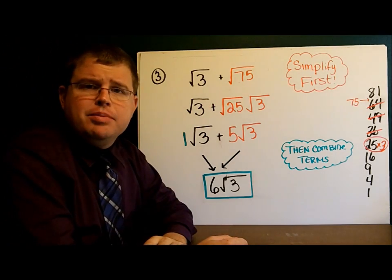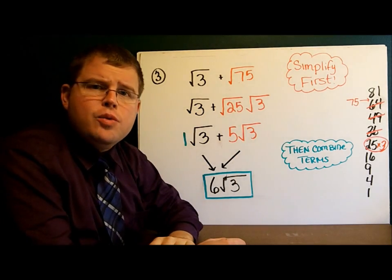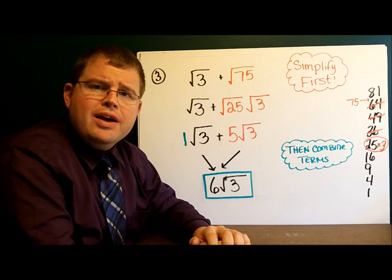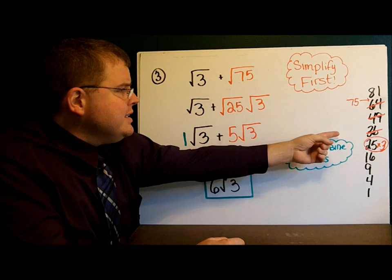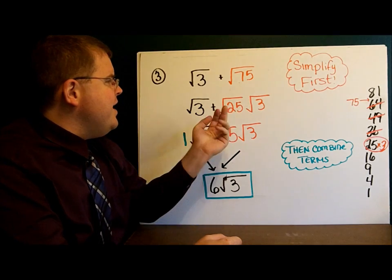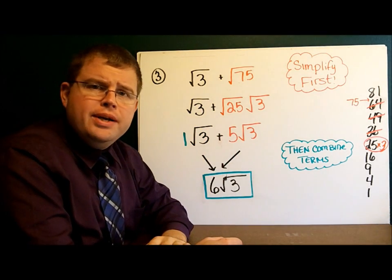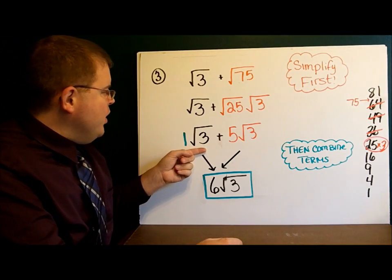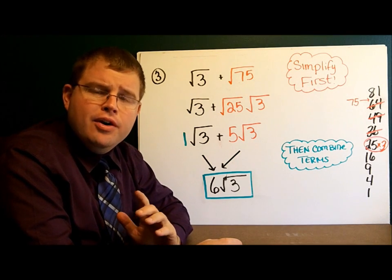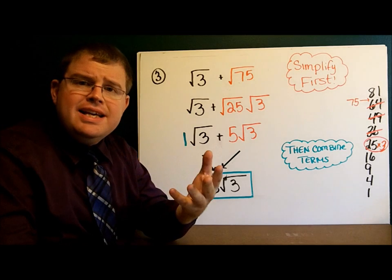The square root of 3 is already in simplest form. The square root of 75, however, is not. I'll go down the list of perfect squares from biggest to smallest to find the largest one that goes into 75. 64 does not, 49 does not, 36 does not, but 25 does — 3 times. So I'll switch out 75 with 25 and 3. The square root of 25 is 5, and the square root of 3 does not simplify. Now I have 1 square root of 3 and 5 square roots of 3 — I now have like terms.